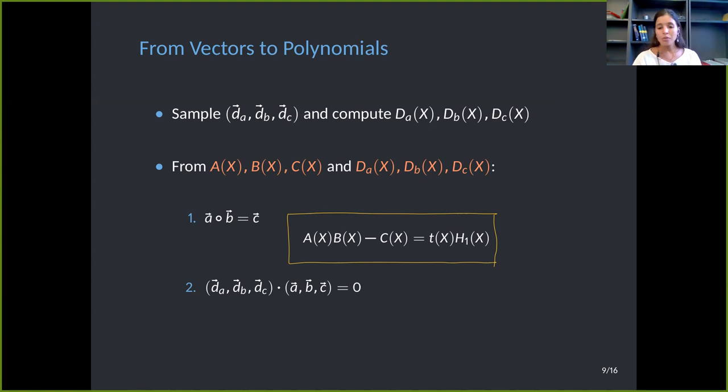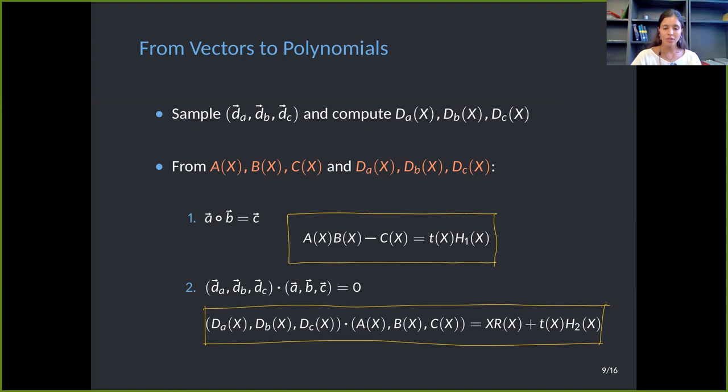And then also the prover has to convince the verifier that the inner product between this random vector D and the vector of the witness is 0. We present a scheme for this inner product relation in our paper. I'm not going to get into the details, but it has a very similar structure to the Hadamard product scheme. So the quadratic relations and the linear relation is divided in two steps. One of them we have in the core, which is the inner product. So we have to focus on how to sample this vector D and compute the encodings.